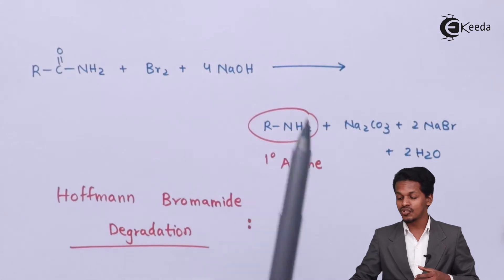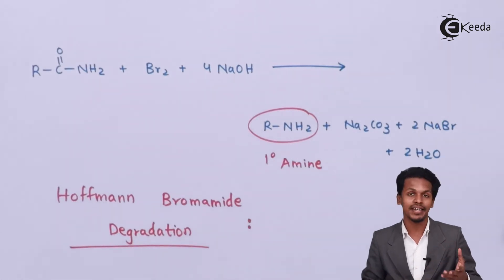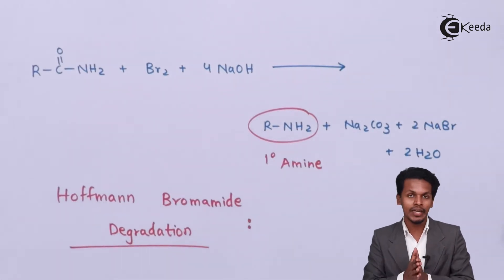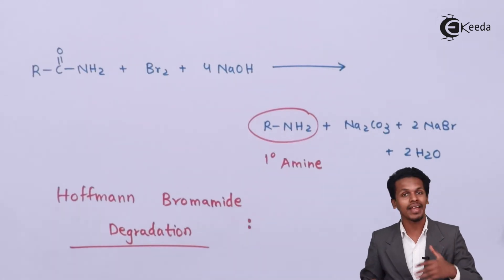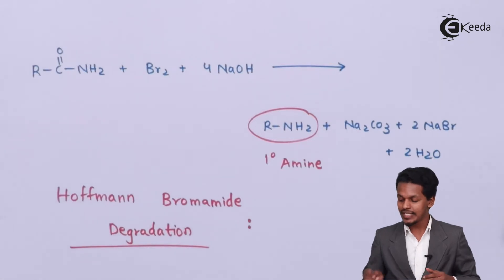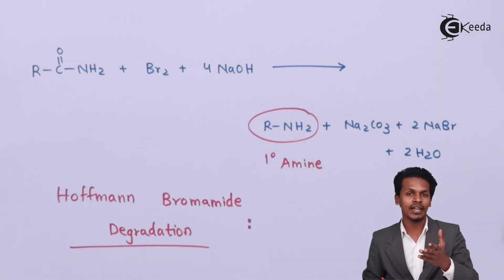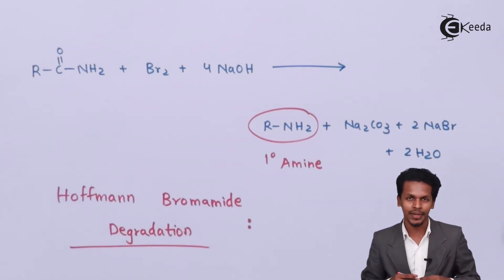So this is the general reaction of Hofmann's bromamide degradation. This is one of the important reactions where we can easily prepare a primary amine which has one carbon atom less compared to its parent amide. Now let me explain this reaction with the help of an example.